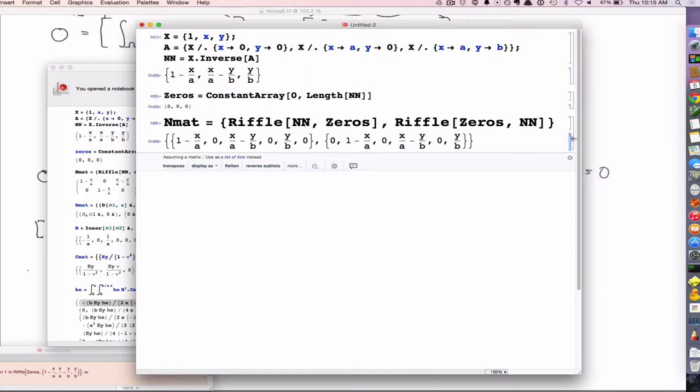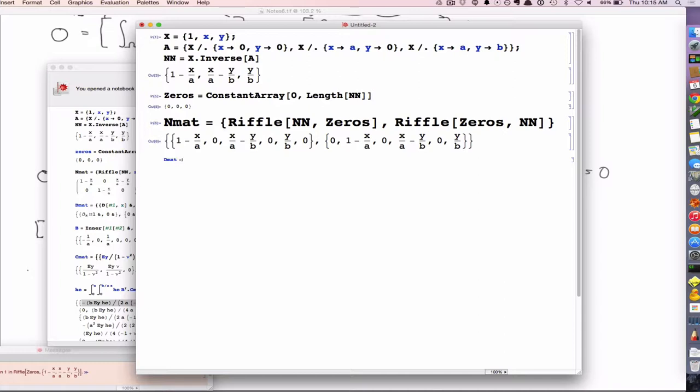So now I need to define the strain displacement matrix, because remember, we're looking for the stiffness matrix, which is B transpose times C times B, where B is this so-called strain displacement matrix. Well, the first thing I need to do is define that differential operator matrix. And I can use some tricks in Mathematica to make this easy for me.